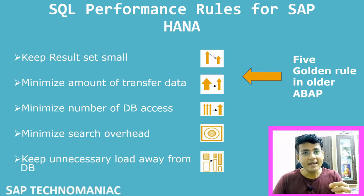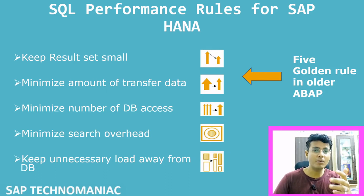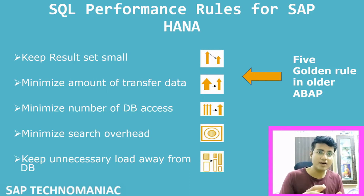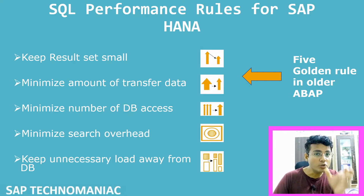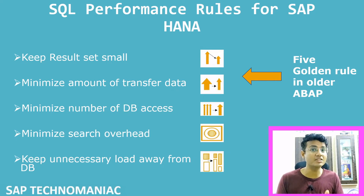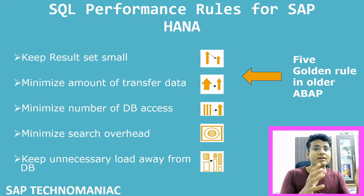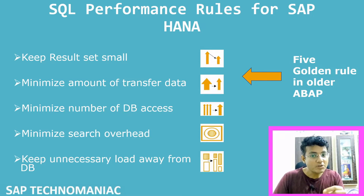The second rule is: minimize the amount of data transferred. Suppose I need only five fields from the MARA table — I should not write SELECT * FROM MARA. I have to write only those fields which are really required explicitly, and get only that data from the database instead of getting all columns of that table.